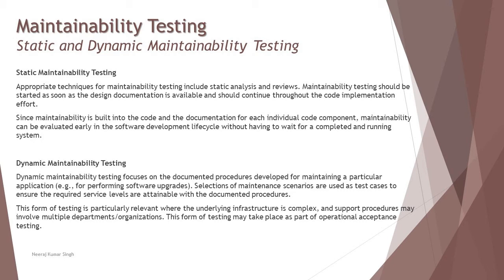The next part covers the various types of maintainability testing. We have static and dynamic maintainability testing. Static is limited to the non-executable part — applying static analysis techniques and reviews to ensure everything is up to the mark. Maintainability testing should start as soon as design documentation is available and continue throughout code implementation. Reviews focus not on finding defects for the build, but on whether the code will allow updates and modifications in the future.